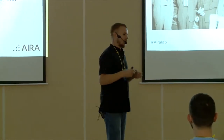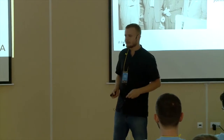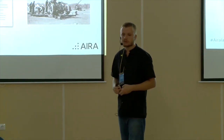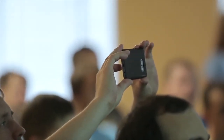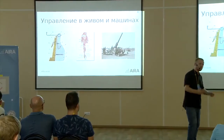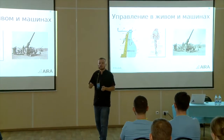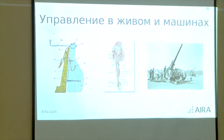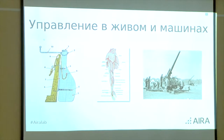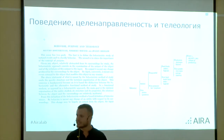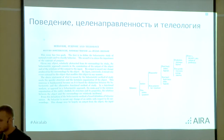Besides that, Arthur Rosenbluth, Norbert Wiener, and Julian Bigelow agreed that it would be a good idea to describe a general conceptual abstract theory dedicated to the search for regularities of control — by the example of a moving human arm aiming to take a pencil, and by the example of ship control with the help of a rudder. In 1943, their common thinking developed into a philosophical work called "Behavior, Purposefulness, and Teleology."